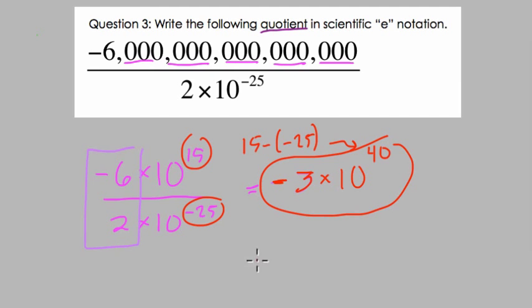Now, in e notation, that would be negative three, e forty, where e means times ten, and the number after e is the exponent. Alright, thanks.